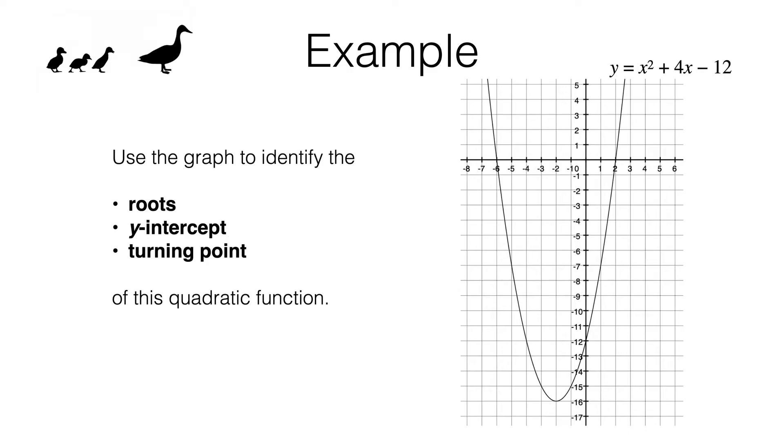In this particular example, the quadratic function we're working with is x squared plus 4x minus 12. Notice that is just the right hand side of this equation. The graph we're working with is the graph of y equals x squared plus 4x minus 12, and that gives us this curve that we see here.